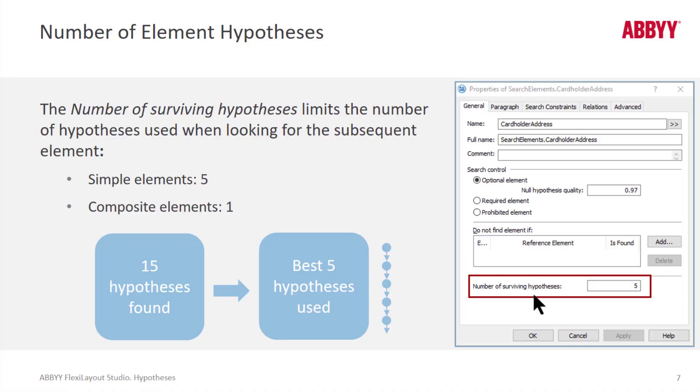And here we see in an element number of surviving hypotheses. The number of surviving hypotheses limits the number of hypotheses used when looking for the subsequent element. So the number of surviving hypotheses is set in each element description. If more hypotheses than the limited number are formed, only the best quality hypotheses will be used. It's not recommended to change the value of the number of surviving hypotheses parameter, because large values may lead to an uncontrollable growth, kind of an exponential growth depending on how complicated your layout is for the tree of hypotheses.